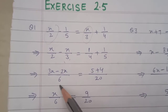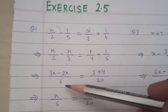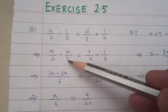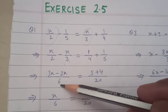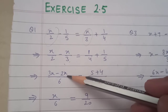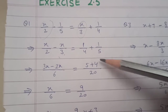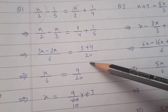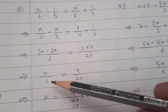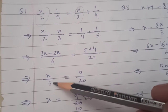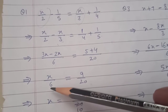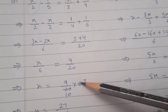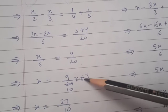2 and 3 have LCM 6. So divide 6 by 2, get 3, so 3x. Divide 6 by 3, get 2, so 2x. Likewise, take LCM of 5 and 4. So this becomes x upon 6 is equal to 9 upon 20. Now this 6 is dividing x, so going to the other side it will multiply. So it cancels from the 2 times table.